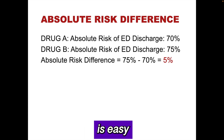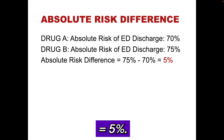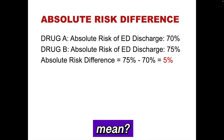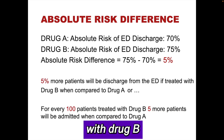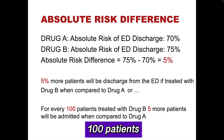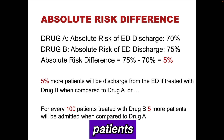The absolute risk difference is easy to calculate: it is 75% minus 70%, which equals 5%. But what exactly does the absolute risk difference mean? We can look at it in one of two ways: 5% more patients will be discharged if treated with drug B compared to drug A, or for every 100 patients treated with drug B, 5 more patients will be discharged compared to drug A.